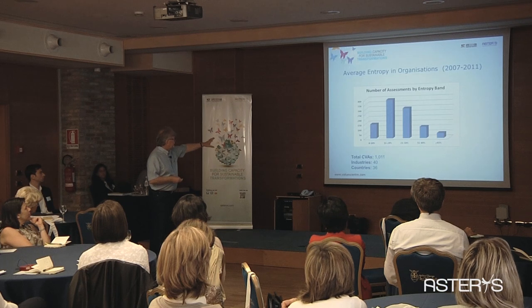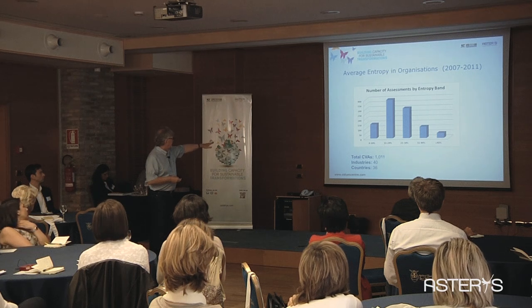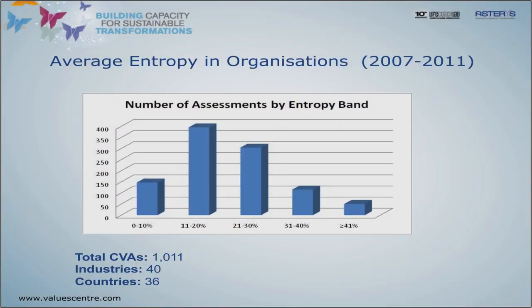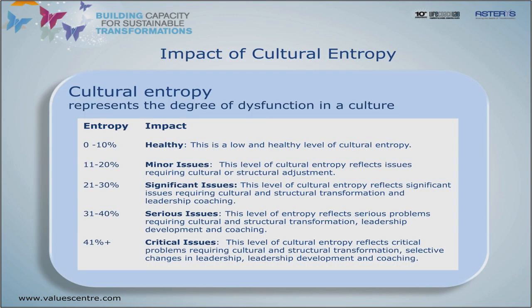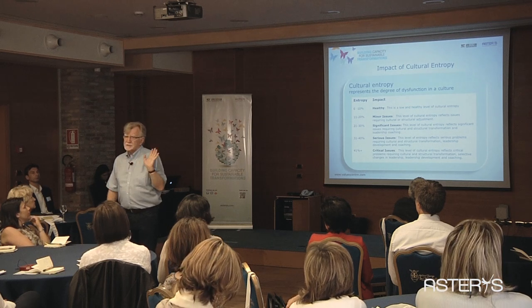When companies follow this roadmap, employee engagement goes up, income goes up, and cultural entropy goes down. As entropy goes beyond 45%, we're even talking about changing leaders. Here's the impact — across over 1,000 organizations, as entropy goes down and values alignment goes up, every positive indicator — staff engagement, income, everything — climbs.